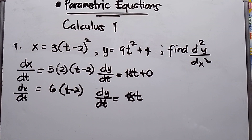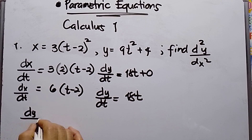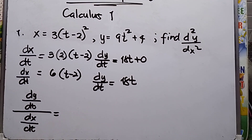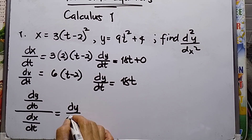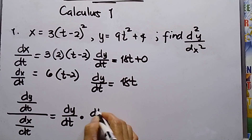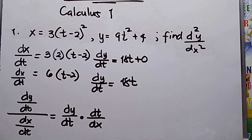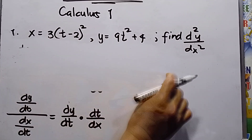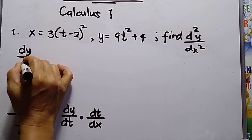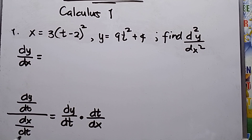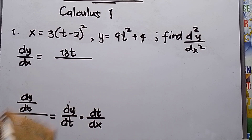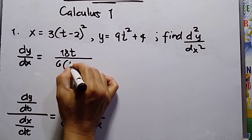In parametric equations, I need to divide dy over dt by dx over dt. Writing this as dy over dt times the reciprocal dt over dx, the result is dy over dx equals 18t over 6(t minus 2).